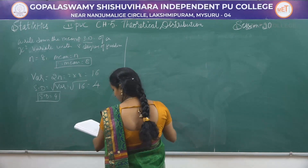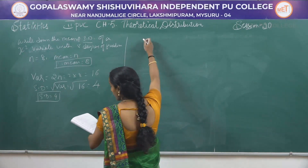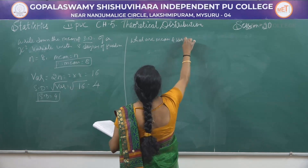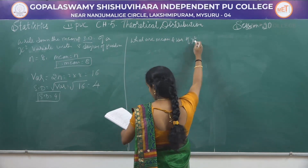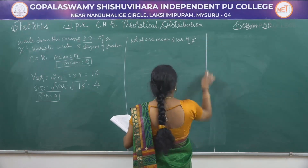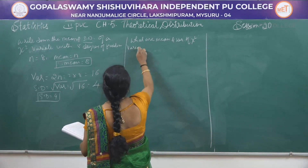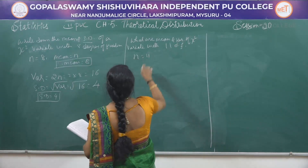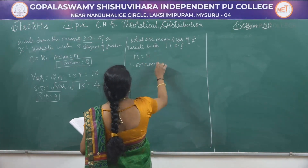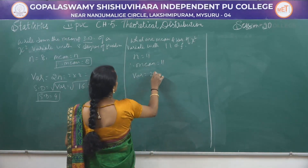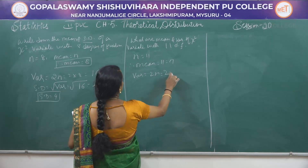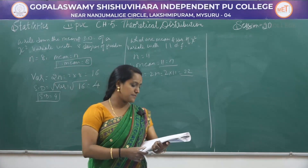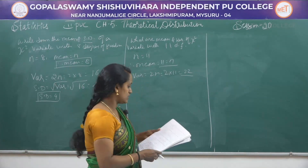Problem: What are the mean and variance of a chi-square distribution with 11 degrees of freedom? Here n = 11. Mean = n = 11. Variance = 2n = 2 × 11 = 22. It looks very simple, but don't forget the formulas.